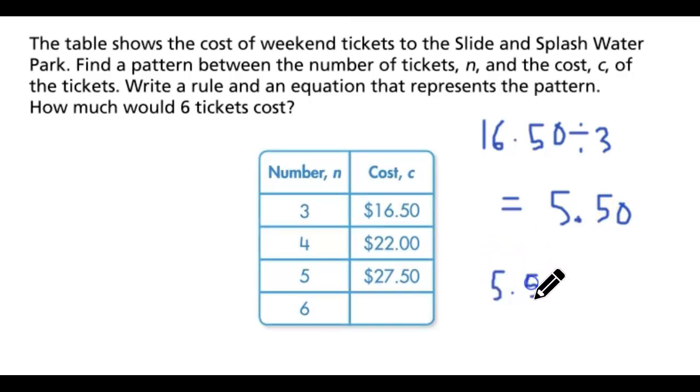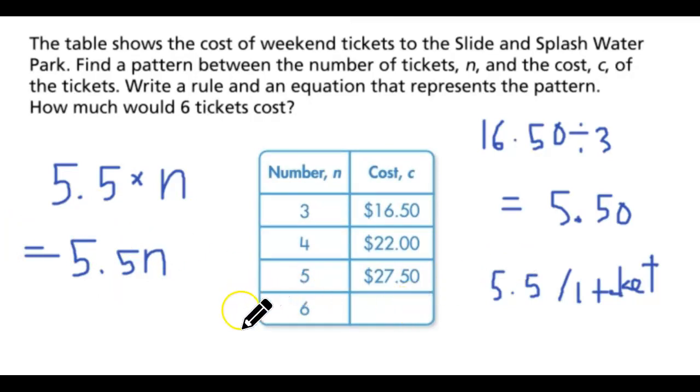5.50 will be the cost for one ticket. We could make a rule of 5.5 times the number of tickets. We could just simply do 5.5n. With that said, we could just multiply 5.5 times 6, and if you do your calculation, it's going to be $33. This is going to be your answer.